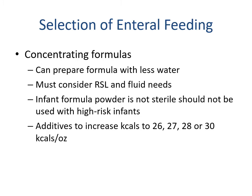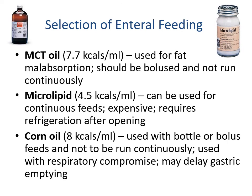To concentrate formulas, we can prepare them with less water, but we must consider the renal solute load and fluid needs — particularly higher protein content. Infant formula powder is clean but not sterile, so it's not ideal for the highest-risk infants. Using additional modulars, we can reach 26, 27, 28, or 30 calories per ounce by changing the ratio or dilution of formula or adding modulars to change density and nutrient composition.